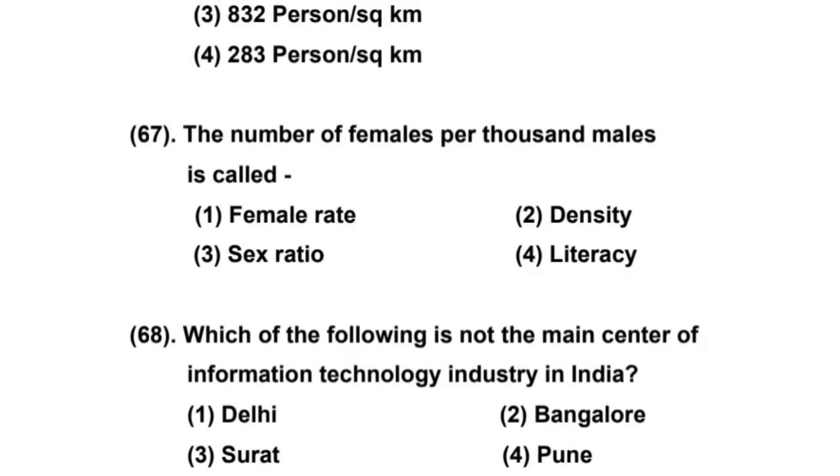The number of females per thousand males is called: Option 1) Female Rate, 2) Density, 3) Sex Ratio. The right answer is Sex Ratio.